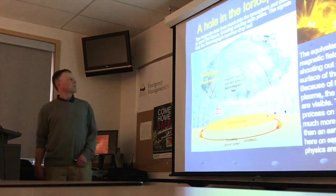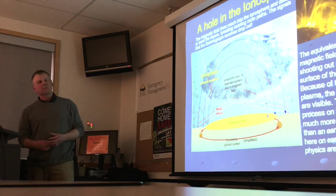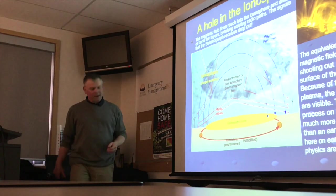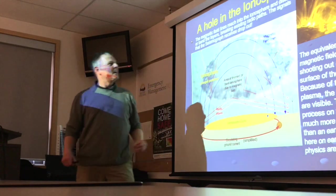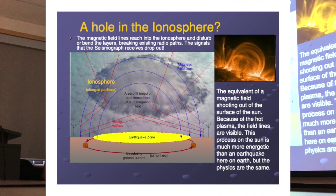Now you can see a hole in the ionosphere. Here is a good example of what's happening at the sun: magnetic field lines come out of the ground and bend around a sunspot. This is exactly the same kind of idea of what's happening on Earth, but of course on a much lower level. You can't see the magnetic fields because they're not lit up like they are on the sun.